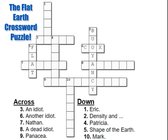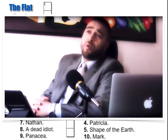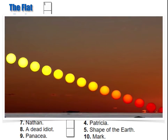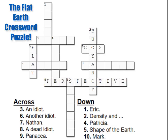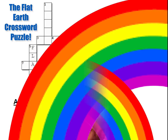I feel kind of bad that you've lost three points in a row. Maybe you could help me out — I was doing this flat earth crossword puzzle and I don't really think like a flat earther. This clue has got me stumped: nine across, an 11-letter word for panacea. Could you help me out? The flat earther answer: 'perspective.' Look, it fits! Dr. Zack, you're a genius. Looks like you finally got a point.